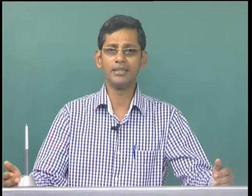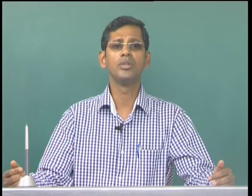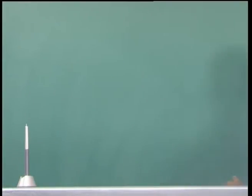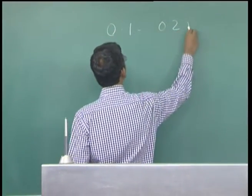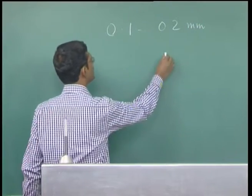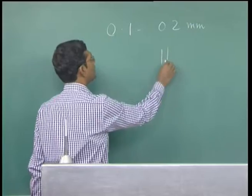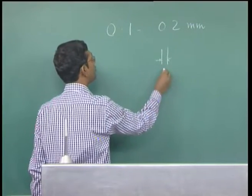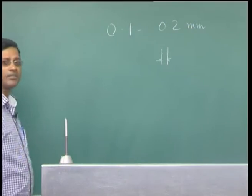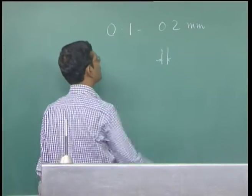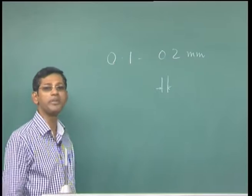We know that our normal eye can see a feature as small as 0.1 to 0.2 millimeters. If there are two points in space, our normal eye can resolve them very precisely if the distance between these two points ranges from 0.1 to 0.2 millimeters. Any machine that can resolve two points closer than this range can be defined as a microscope.